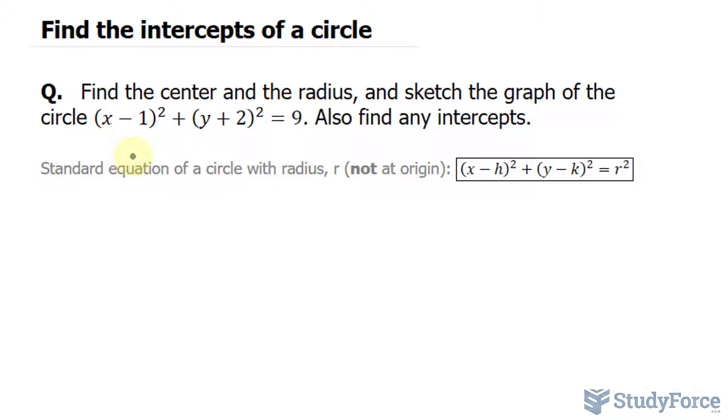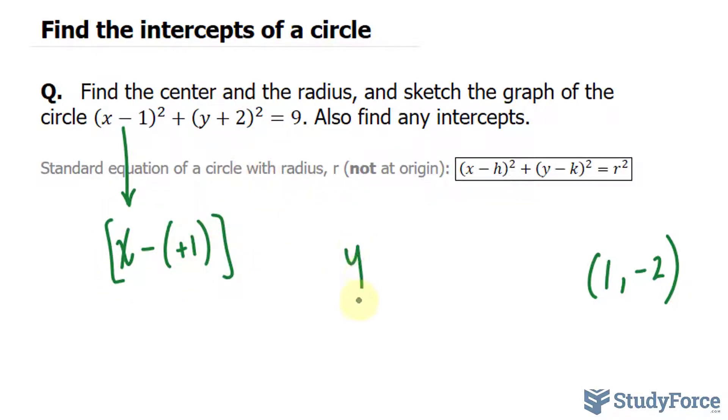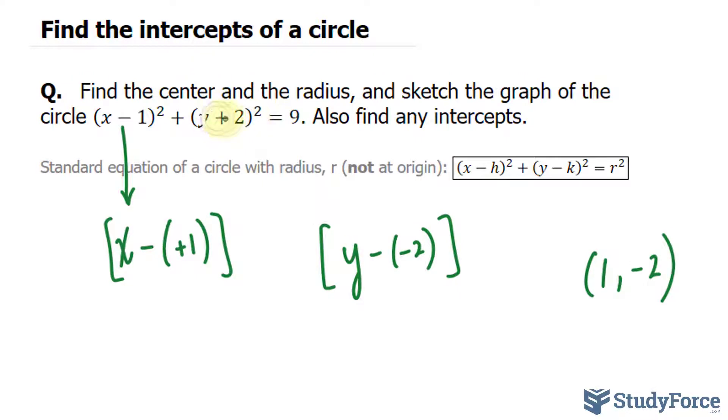So if you see minus 1 here, it's actually positive 1. And if you see positive 2 here, it's minus 2. The reason why it's the opposite is because if we match this equation to the general format, this part is like saying x minus positive 1, and this part is like saying y minus negative 2. As you can see, if you simplify this, it becomes y plus 2. But since we want to match it to that, you have to look at it in this format. And this is why it's negative 2.